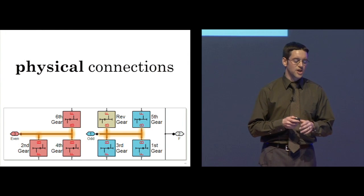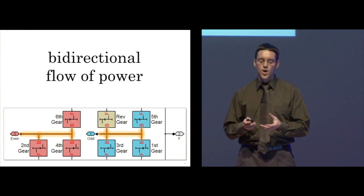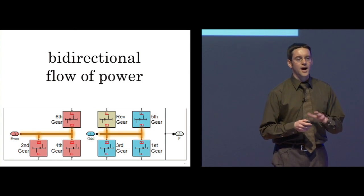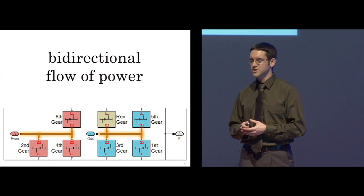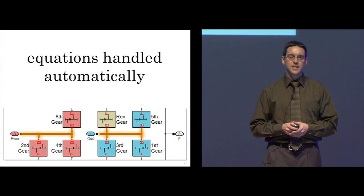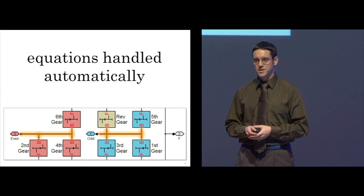Important to note is that these are physical connections. They represent a bi-directional flow of power between the components. What that means to me is I don't have to worry about incorporating other effects from the other components in the power train. I simply assemble my components and the system level equations are handled automatically by Simscape.